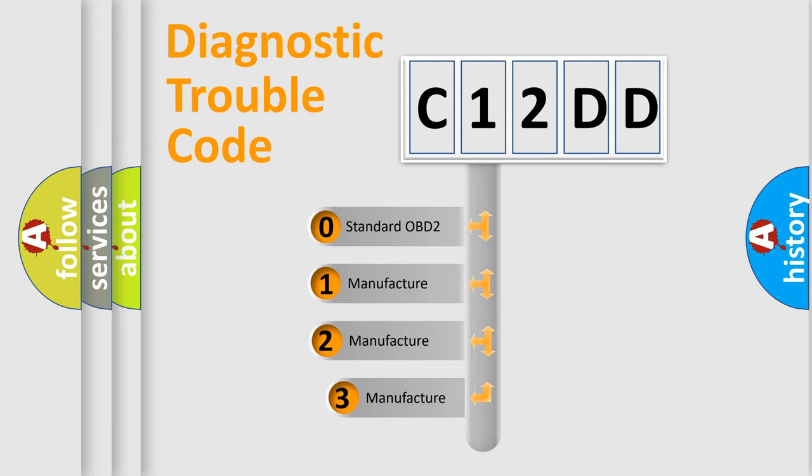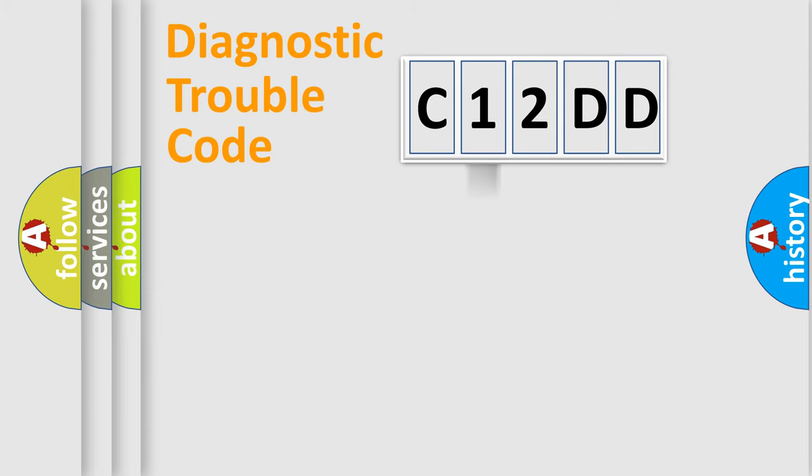If the second character is expressed as zero, it is a standardized error. In the case of numbers 1, 2, or 3, it is a manufacturer-specific expression of the car-specific error.